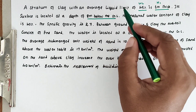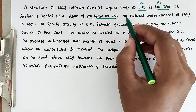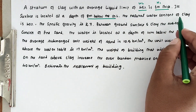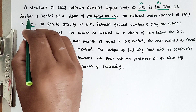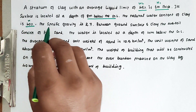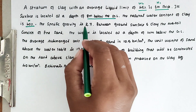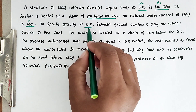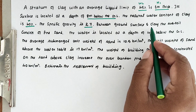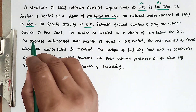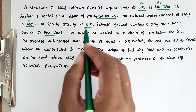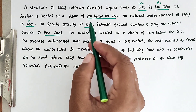Above the clay layer there will be a layer. The natural water content of the clay is 40%. Water content W is 40%. Specific gravity G is 2.7. Between the ground surface and the clay layer, subsoil consists of fine sand, so there are 2 layers.